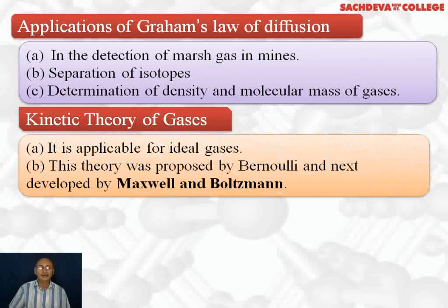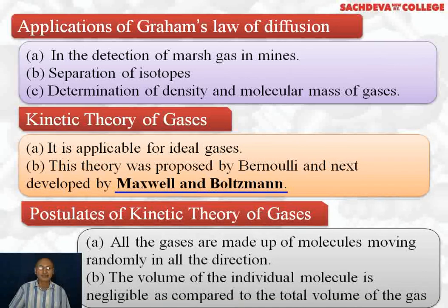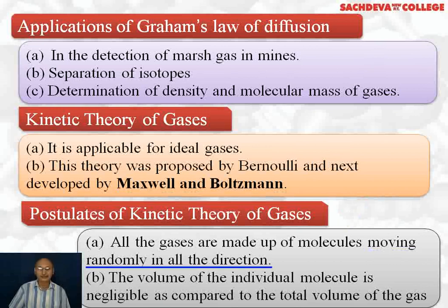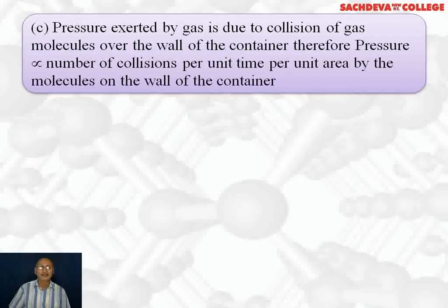Next we are going to take up kinetic theory of gases, which is applicable to ideal gases only. This theory was proposed by Bernoulli and later developed by Maxwell and Boltzmann. The postulates of kinetic theory of gases: all gases are made up of molecules moving randomly in all directions. The volume of the individual molecule is negligible as compared to the total volume of the gas. Pressure exerted by the gas is due to collision of gas molecules on the walls of the container.